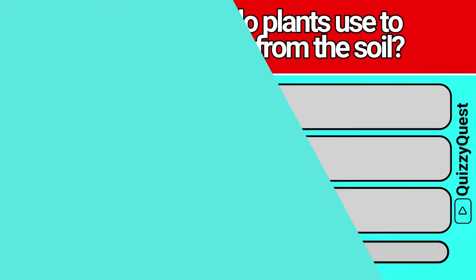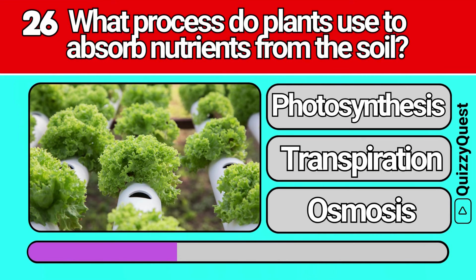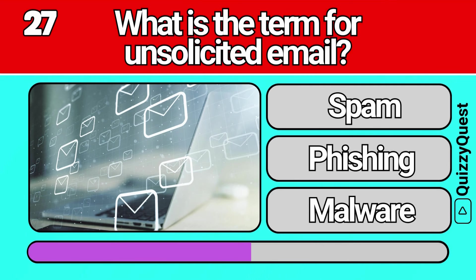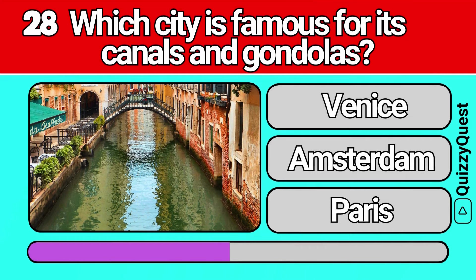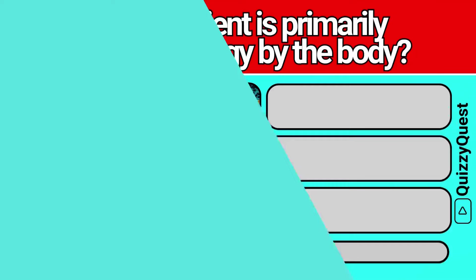What process do plants use to absorb nutrients from the soil? What is the term for unsolicited email? Which city is famous for its canals and gondolas? What nutrient is primarily used for energy by the body?